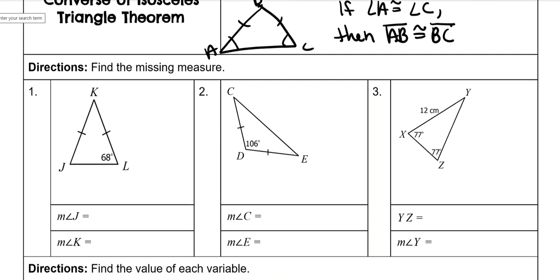So now we're going to apply that. So because these are across from the sides, those are the angles that are congruent. So J is also 68 degrees. And then to find the measure of angle K, you subtract them from 180, which is 44 degrees.